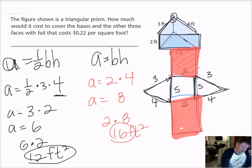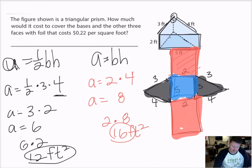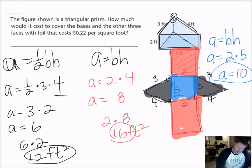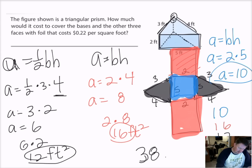The only thing I have left is the blue rectangle in the middle. Its dimensions are two feet wide by five feet deep. Area equals base times height, so two times five gives me an area of 10 square feet. Now I have all my faces: the blue middle rectangle is 10, the two red rectangles total 16, and the two triangles total 12. Adding them all together: 10 plus 16 plus 12 equals 38 square feet. So my total surface area is 38 feet squared.